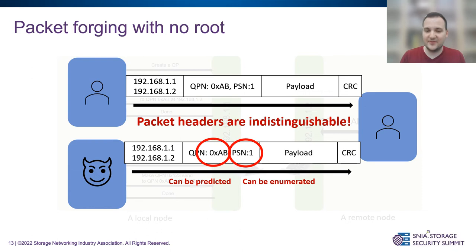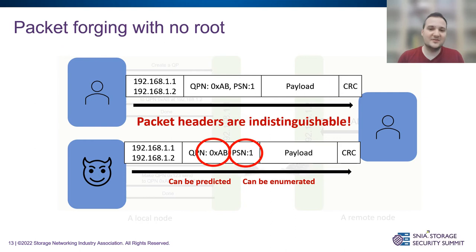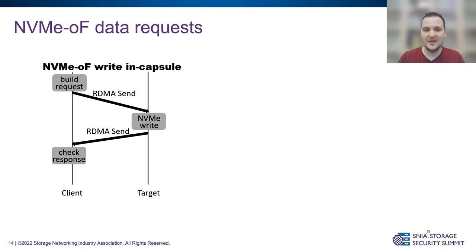There are also sequence counters — packets must be processed in order per InfiniBand architecture. However, the sequence counter is only 24 bits, so you only need a few seconds to enumerate the sequence number and successfully inject a packet. If you think about it, spending just a few seconds on enumeration to change the content of a remote NVMe block is a very low price for such a privileged operation.